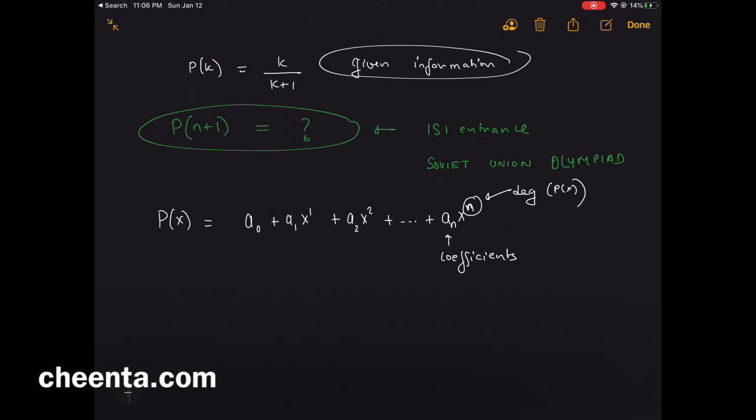We will construct an auxiliary polynomial, and this is a standard strategy for many of the problems like this. We call this auxiliary polynomial using this given information. So let's cross-multiply: k plus 1 into P(k) equal to k, which means (k+1) times P(k) minus k is 0. So let's use this information to create an auxiliary polynomial which is (x+1) times P(x) minus x. Let's call this polynomial G(x).